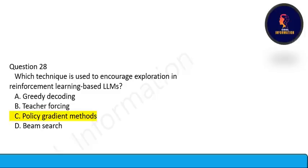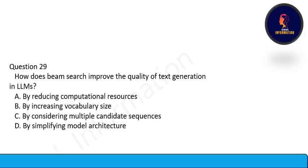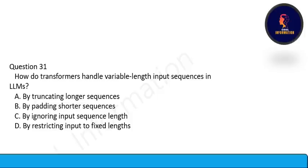Next question: How does beam search improve the quality of text generation in LLMs? Option C is correct: by considering multiple candidate sequences. Next: How do transformers handle variable-length input sequences in LLMs? By padding shorter sequences. Option B is correct.